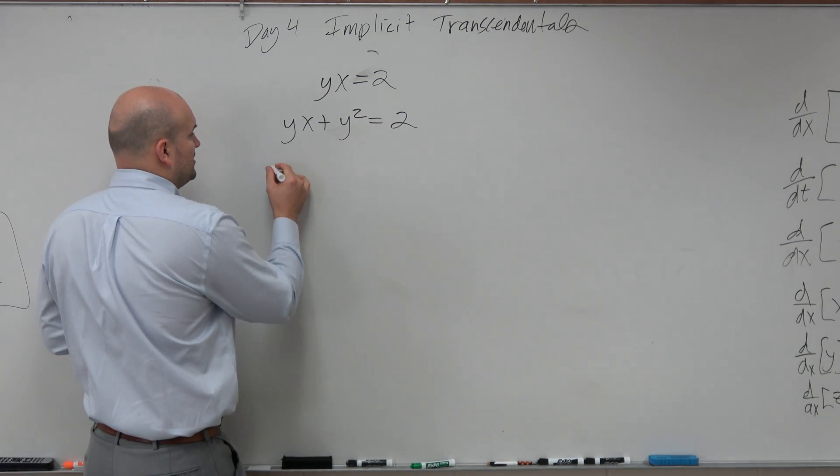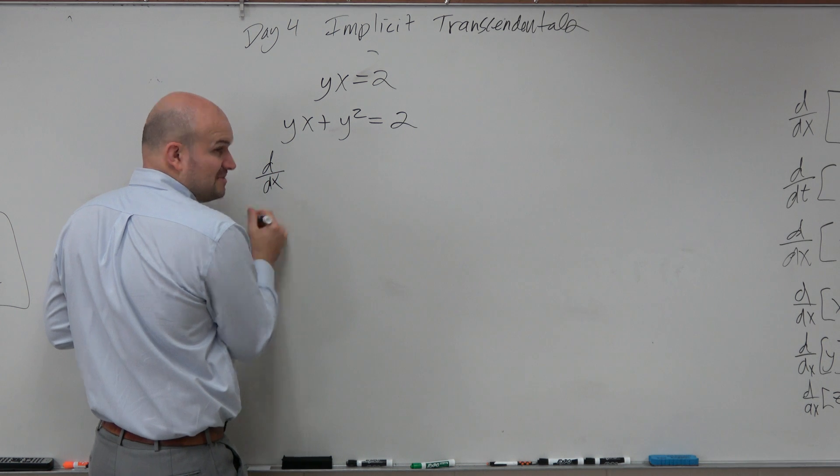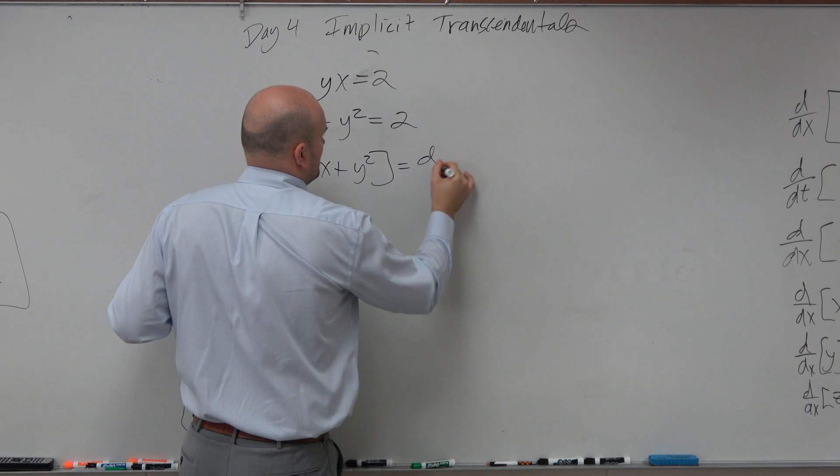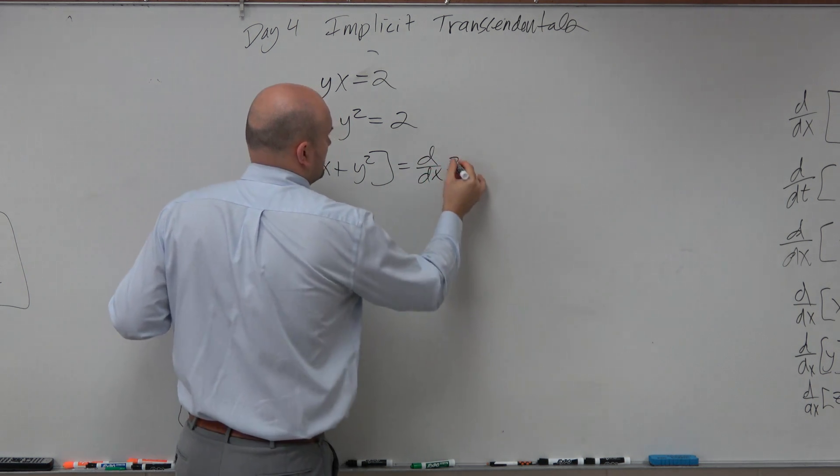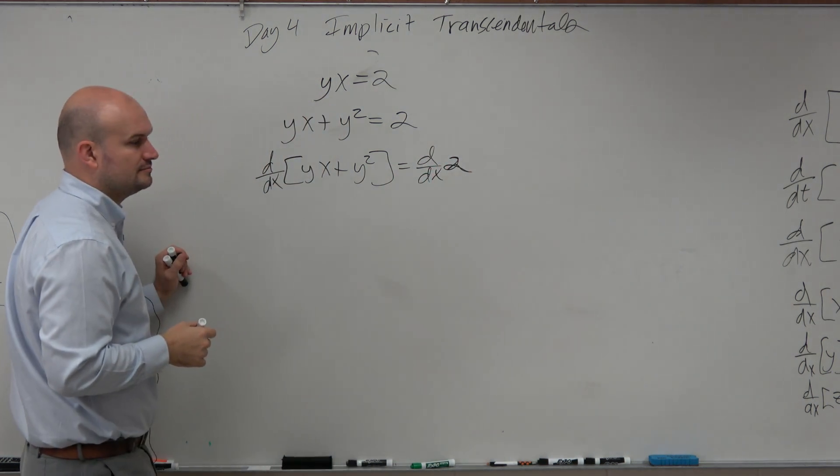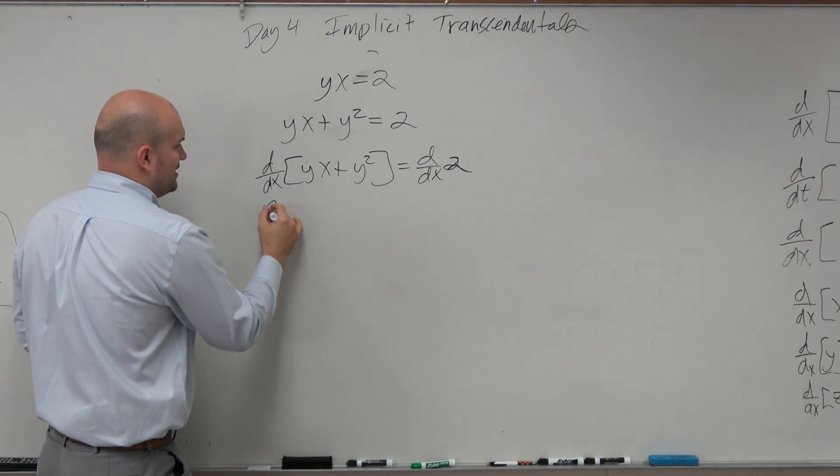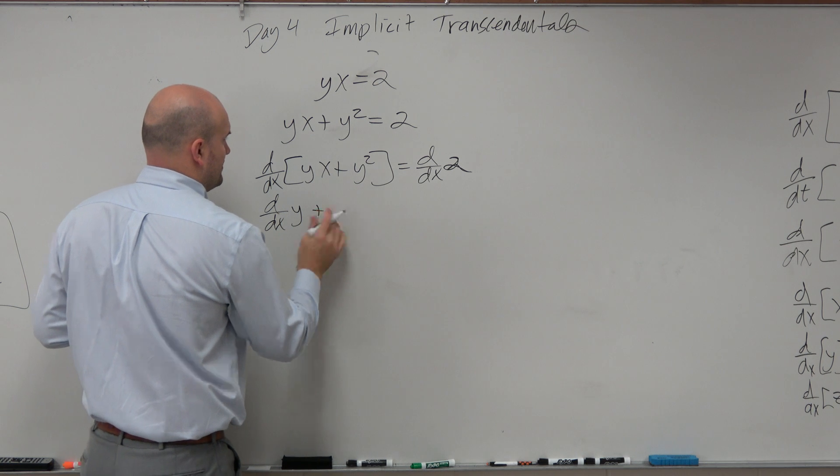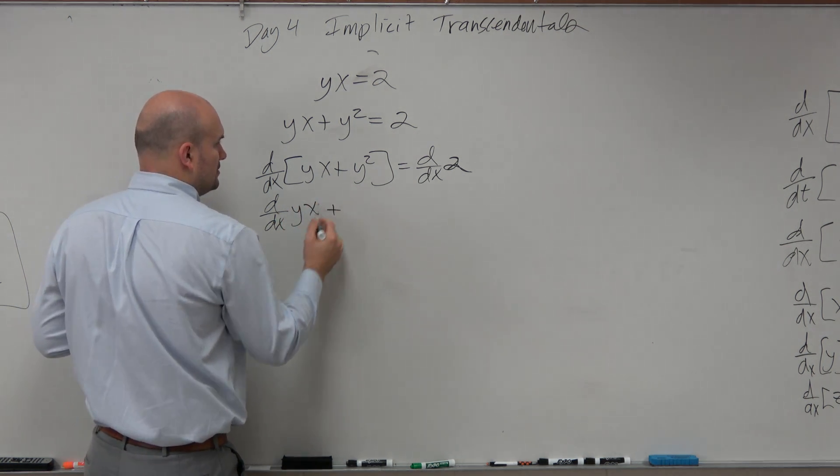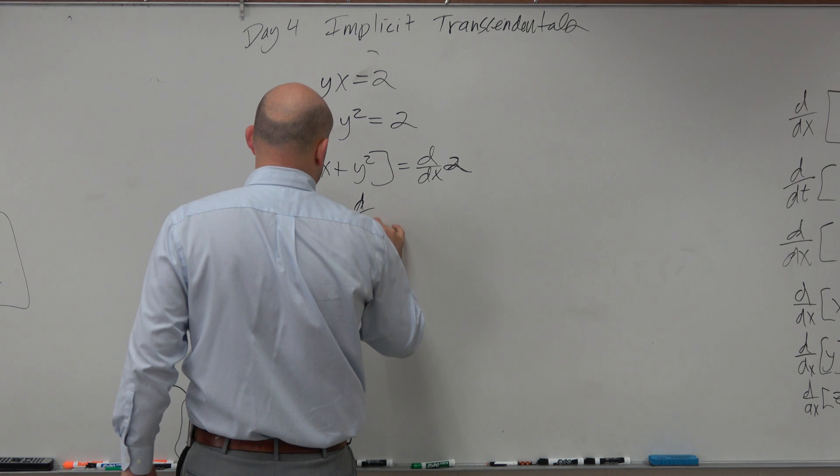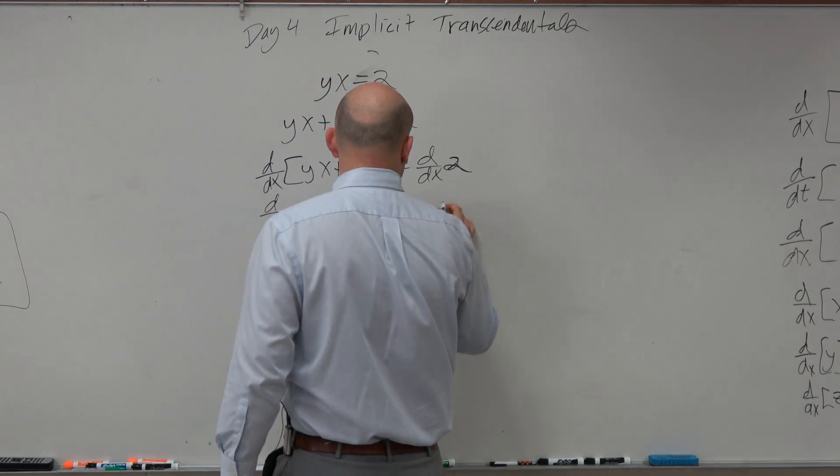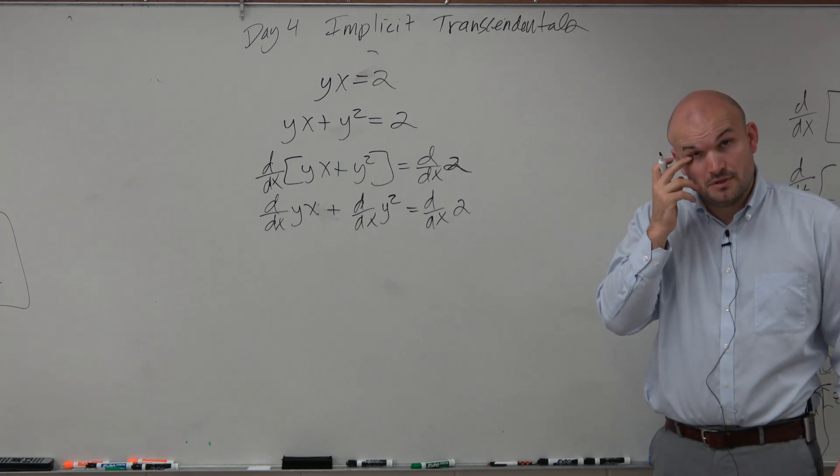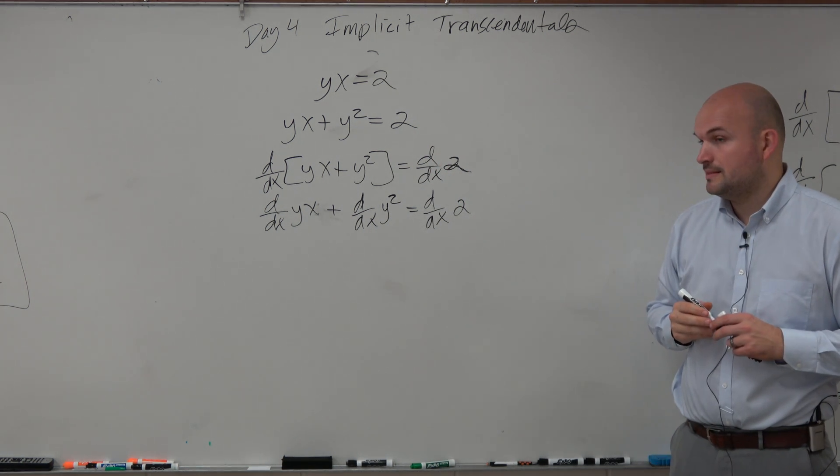So if we're going to take the derivative with respect to x, because that's our end goal, of yx plus y squared equals 2. Now, I'm taking d over dx of yx plus d over dx of y squared equals d over dx of 2.